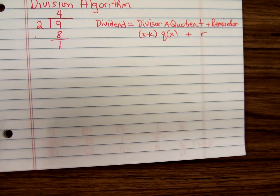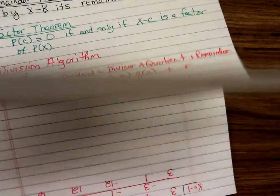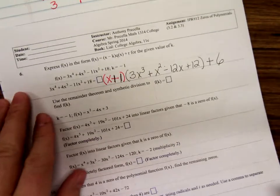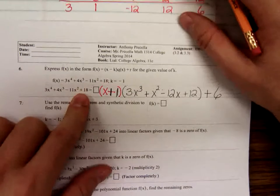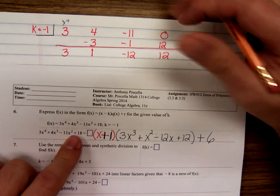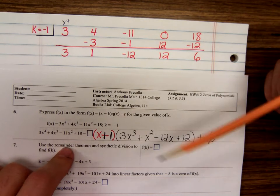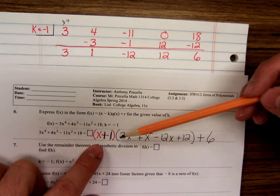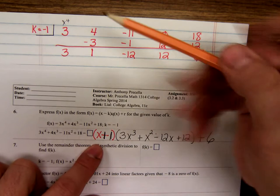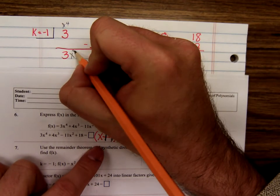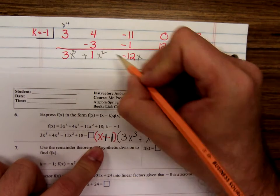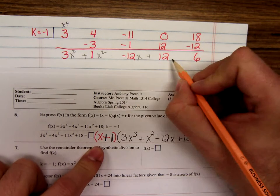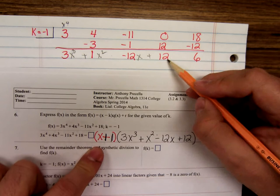That one and number six, here we were doing the synthetic division up above here, x minus k times, remember how you decrease the exponent by one. And that last number is the constant, this number is the constant.